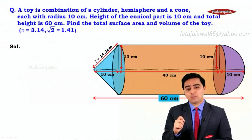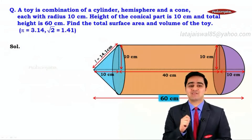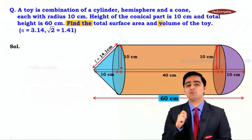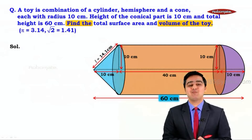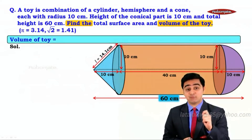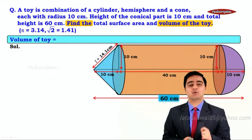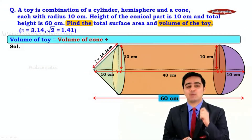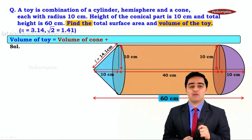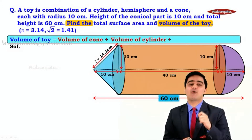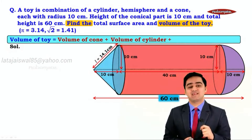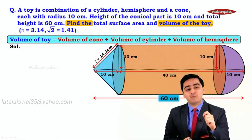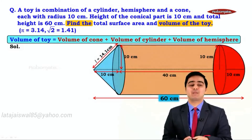We understood how to get the total surface area of the toy. Now it's time to find the volume of the toy. We can say that the volume of the toy is equal to the volume of the cone plus the volume of the cylinder plus the volume of the hemisphere.